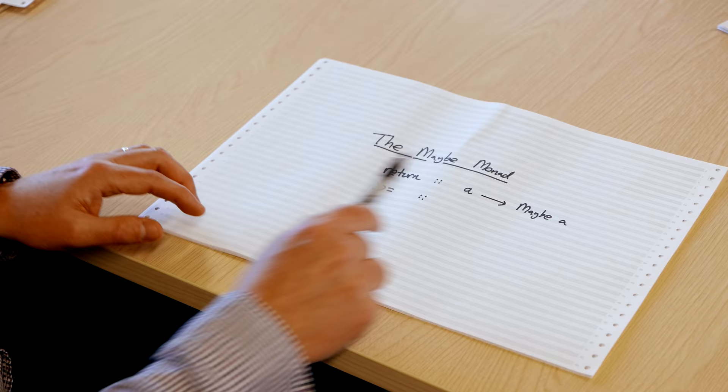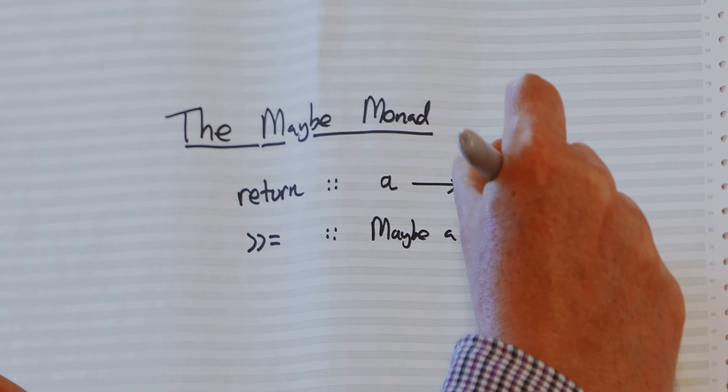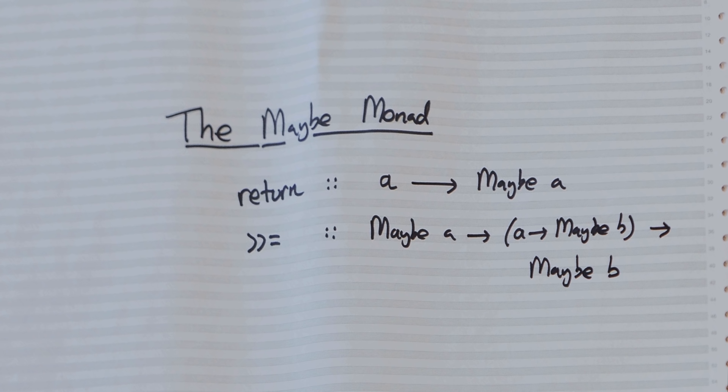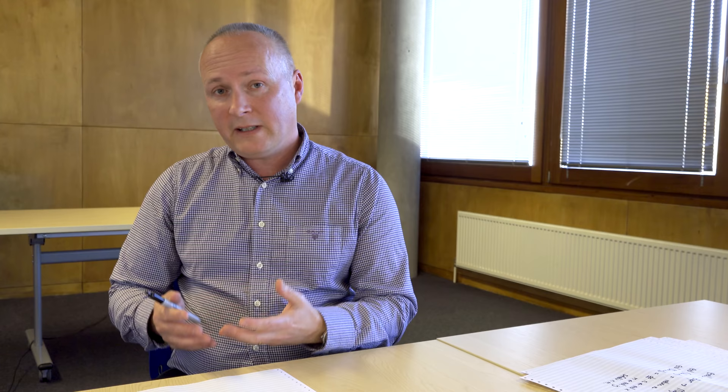The sequencing operator gives you a way of sequencing things that can fail. You give it something which can fail — a Maybe A — and a function that tells you what to do with that A if you succeed — an A to Maybe B — and then you get back a Maybe B. And this is essentially all that a monad is: some kind of type constructor, like Maybe or List or others, together with two functions that have these types — return and the sequencing operator.